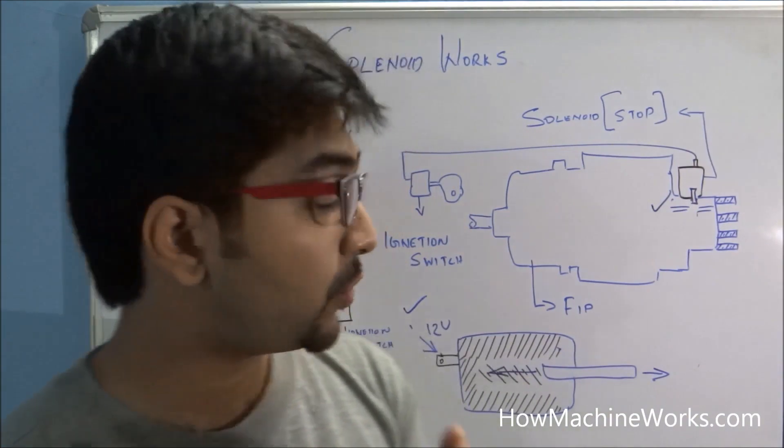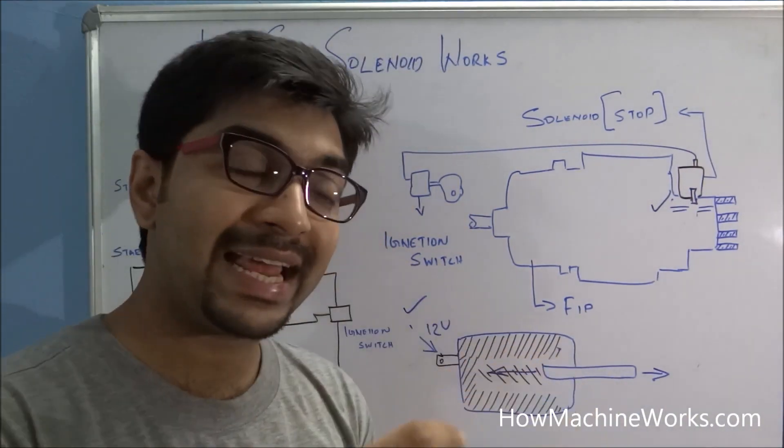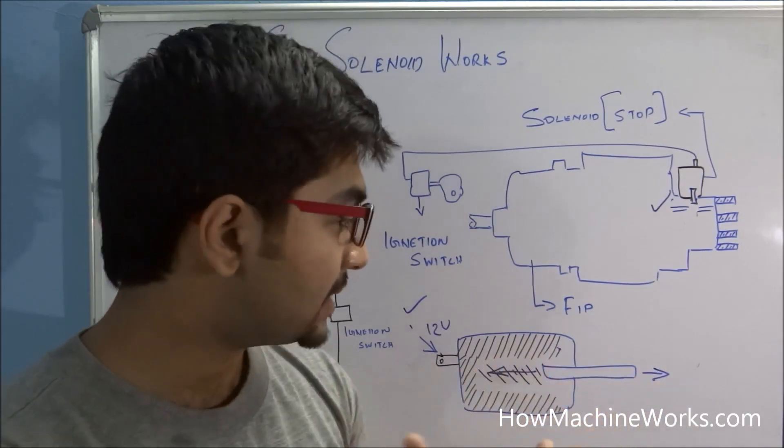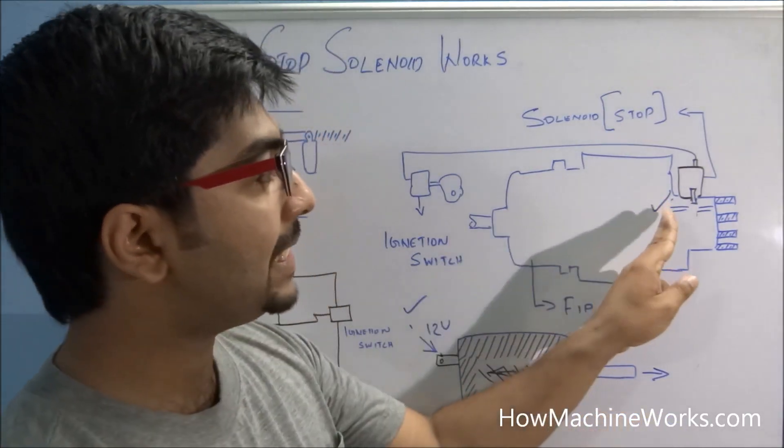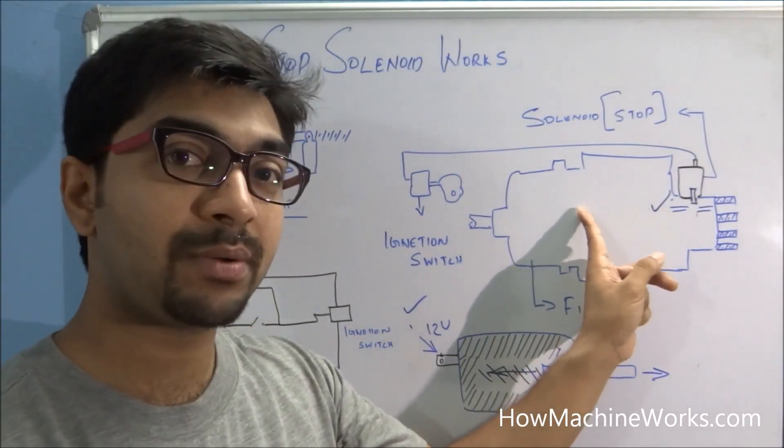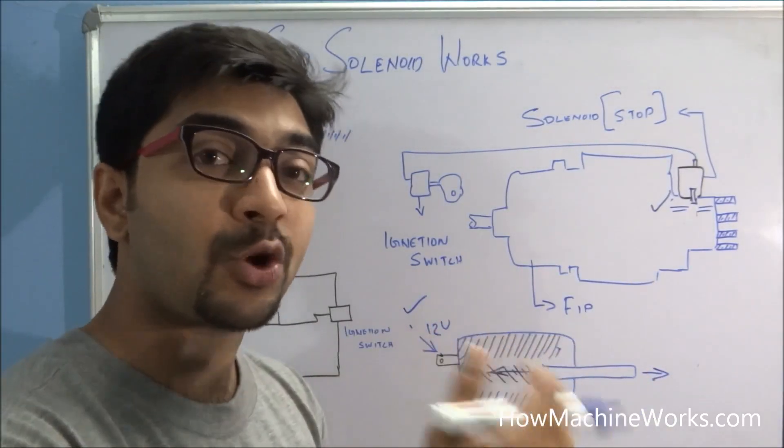So that's how simply a stop solenoid works. So let's now go again and see how it actually works when the power is given in and the power is released. So the movement of this shaft, which actually cuts and opens up the fuel flow inside the fuel injection pump, results in the starting and stopping of the vehicle.